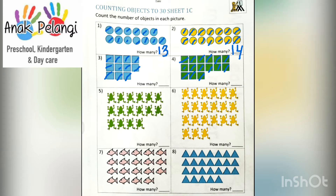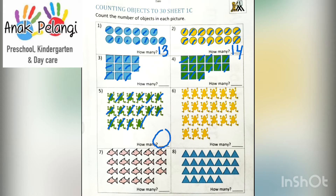Let's continue to number 5. How many green frogs are there? 1, 2, 3, 4, 5, 6, 7, 8, 9, 10, 11, 12, 13, 14, 15, 16. There are 16 green frogs. How many? 16. Write 16 here.